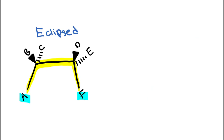In the last video, I talked about how to draw a staggered Newman projection, and in this video I'm going to be talking about how to draw the eclipsed Newman projection. Just like in the last video, we're going to go ahead and look from one end of the molecule. You can either be looking from this side or from this side of the molecule.